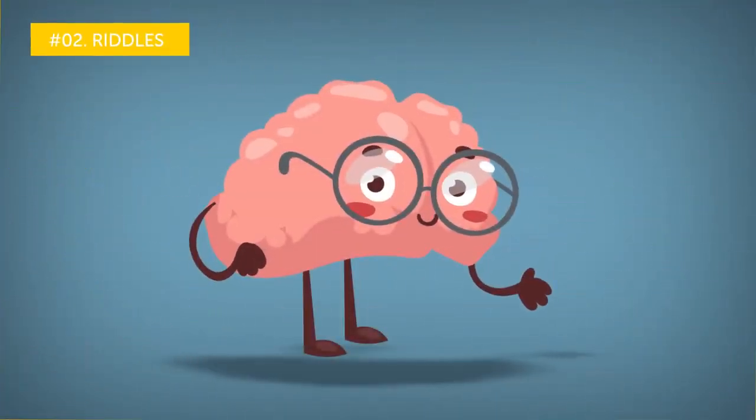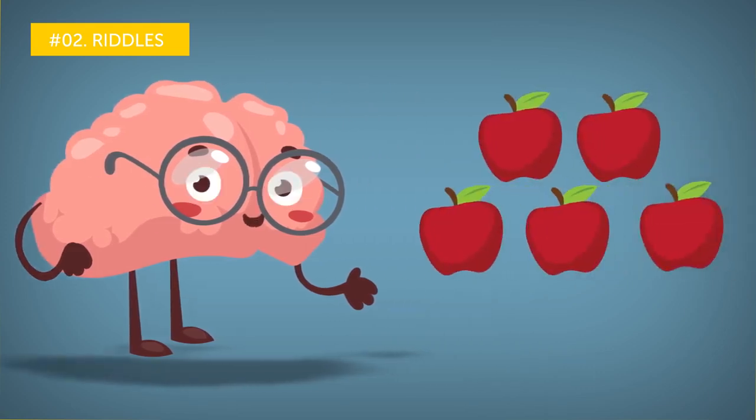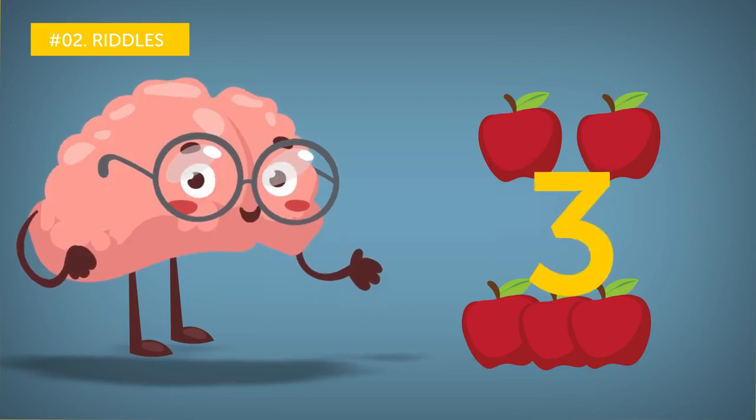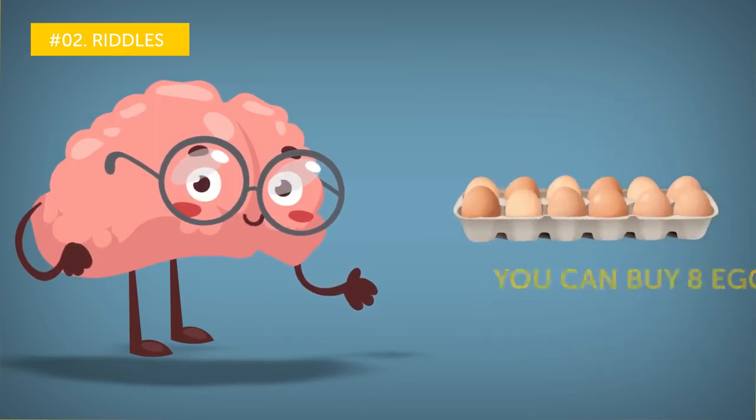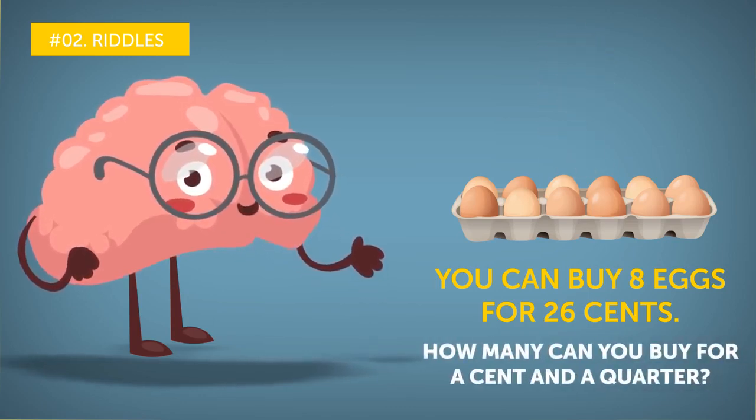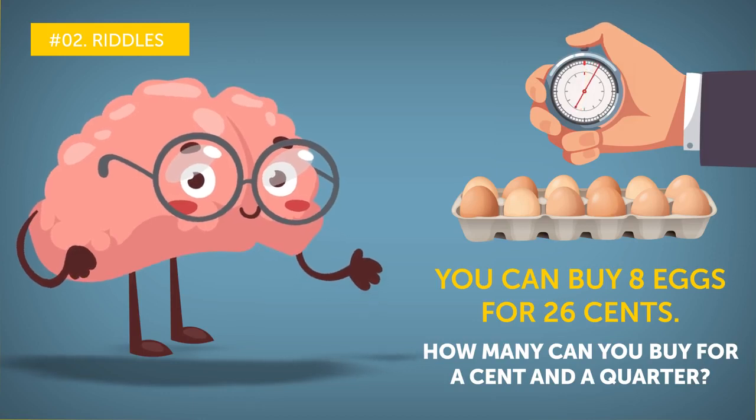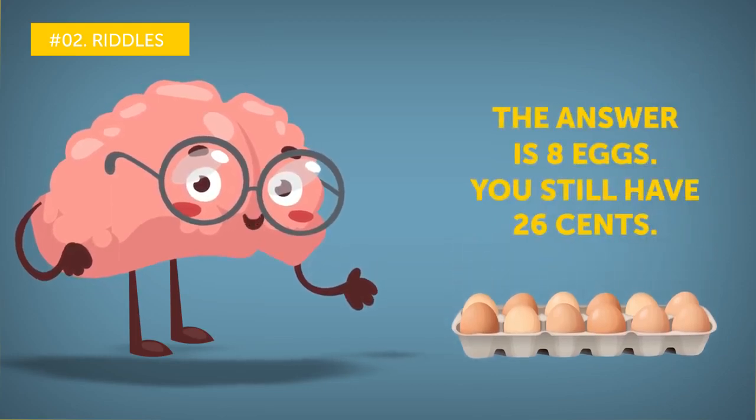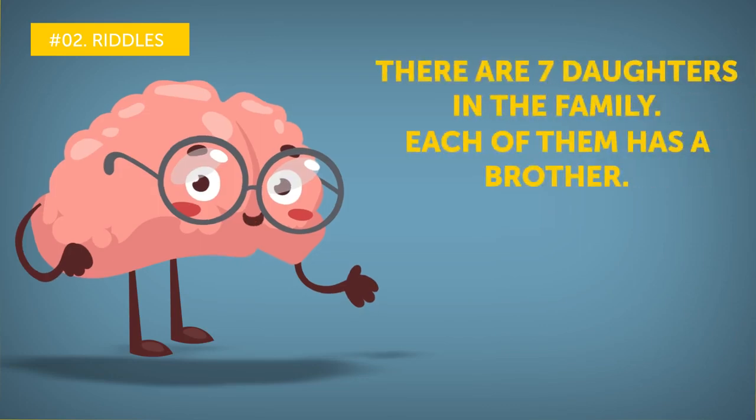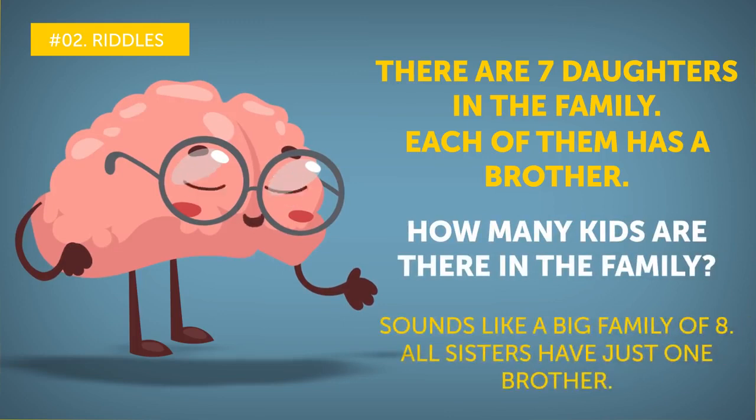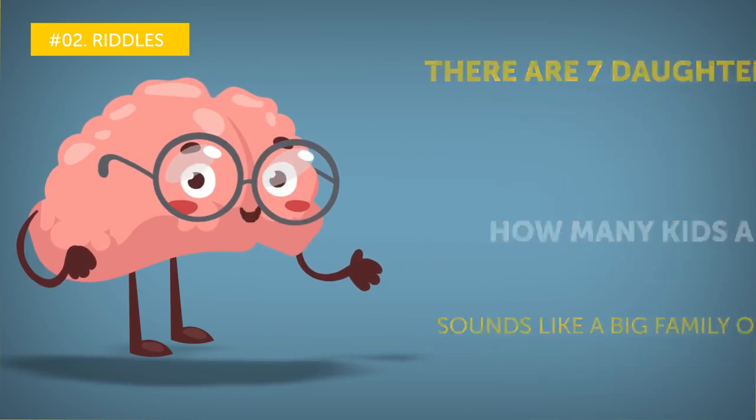Number two, riddles. Different kinds of riddles are a great help if you want to keep your mind sharp. Let's give it a go. If you take three apples from a group of five, how many apples will you have? Hmm, five, three, two. The answer is three apples. You just took them yourself. Alright, let's try it again. You can buy eight eggs for 26 cents. How many can you buy for a cent and a quarter? Five seconds to think it over. The answer is eight eggs. You still have 26 cents. There are seven daughters in the family. Each of them has a brother. How many kids are there in the family? Sounds like a big family of eight. All sisters have just one brother. Alright, enough of that.